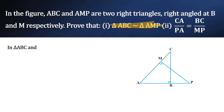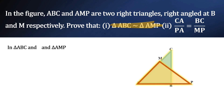In triangle ABC and triangle AMP, you can observe that angle A is common to both. So, angle BAC in triangle ABC is equal to angle MAP in triangle AMP. They are common angles.